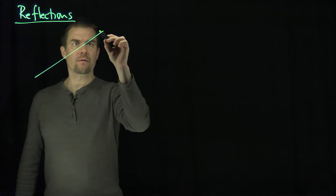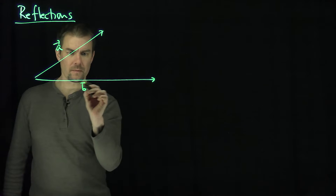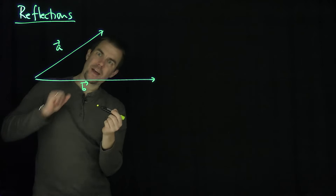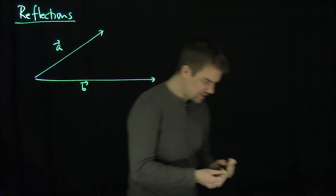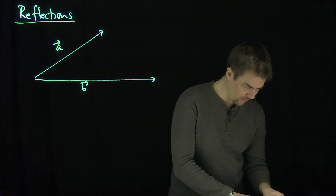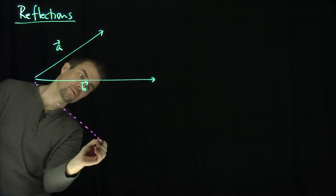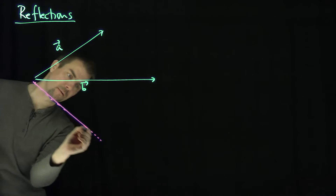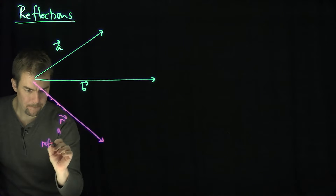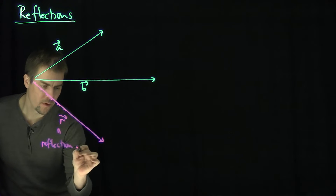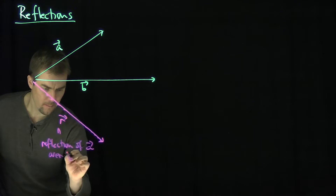If I'm given a vector a over here, and let's say that here's a vector b over here. I would like to reflect a over b. I've made b horizontal here to make the reflection look easier. So what would the reflection be? The reflection is going to be this vector right down over here — that's my reflection vector. So that vector over there is going to be my reflection vector r. This is the reflection of a over b.